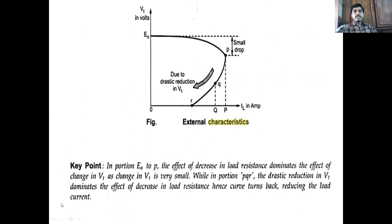Key observations: in the portion E0 to P, the effect of decreasing load resistance dominates — the load current increases moderately. In the portion PQR, the drastic reduction in Vt dominates over the effect of decreasing load resistance, hence the curve returns back. There are two competing effects: the load resistance effect (from E0 to P) and the terminal voltage effect (from P to R).